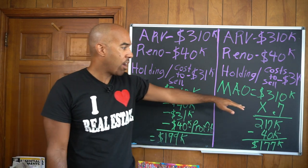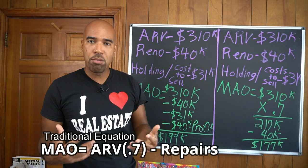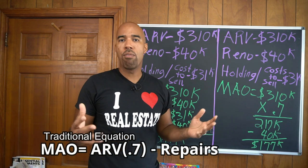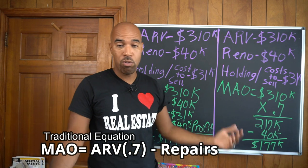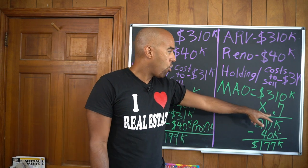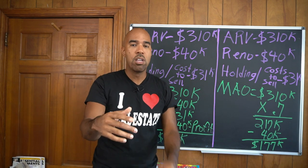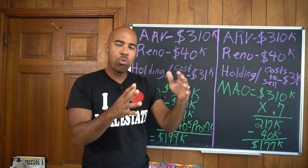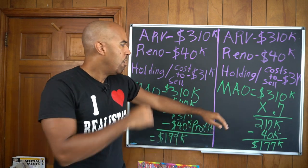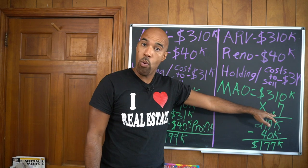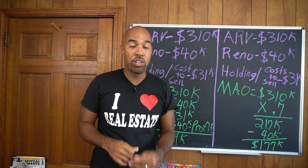The key thing to get 100% clear: you can't use all equations for all price ranges. A lot of investors start with the Maximum Allowable Offer formula: ARV times 0.70 minus repairs. Some use 0.65 — a lot of hard money lenders do too. But when you get up into the $200K–$500K houses and beyond, this equation won't work, and I'm going to show you why today.